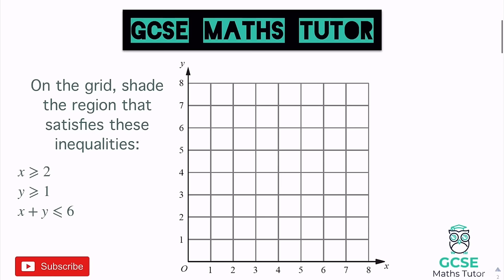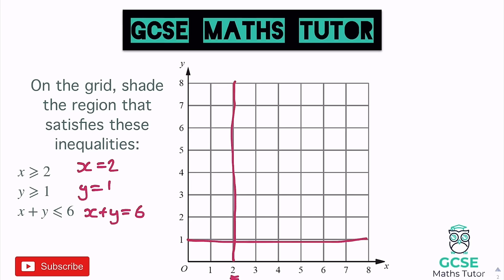Here's another question: on the grid, shade the regions that satisfy these inequalities. These inequalities do have the equal-to symbol, so we draw solid lines rather than dotted lines. x is greater than or equal to 2, so we draw x equals 2 as a solid vertical line. Then y is greater than or equal to 1, so we draw y equals 1 as a solid horizontal line.